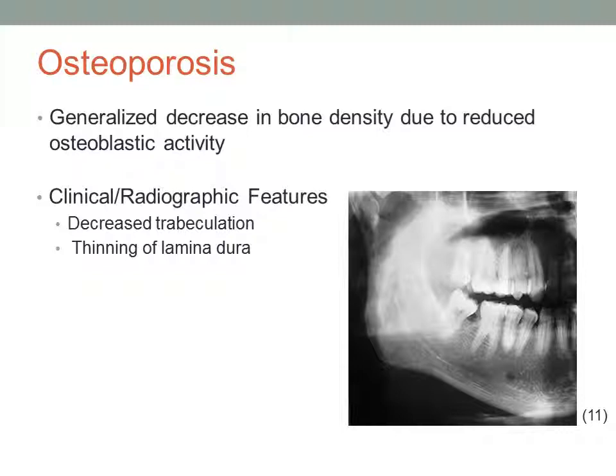Our second differential diagnosis, osteoporosis, is a decrease in bone density due to the reduced activity of osteoblasts. Radiographic features include decreased trabeculation and thinning of the lamina dura. However, patients do not exhibit areas of sclerotic bone healing which are manifested in patients with sickle cell anemia.